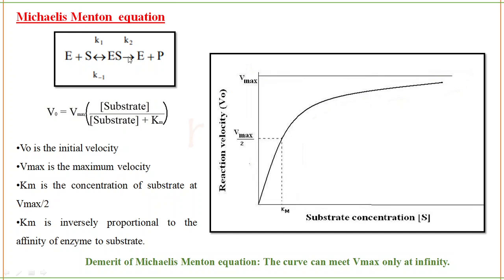Enzyme plus substrate gives enzyme-substrate complex, which dissociates to enzyme and product. Here k1, k-1, and k2 are the rate constants — k1 for forward reaction, k-1 for reverse reaction. The Michaelis-Menten equation is: V0 = Vmax × [S] / (Km + [S]). This is a very important equation — note it down because you will get numericals from this.